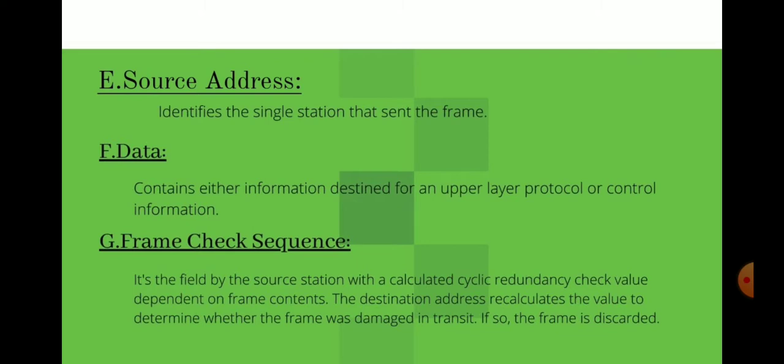The Frame Check Sequence (FCS) field is filled by the source station with a calculated Cyclic Redundancy Check value dependent on the frame contents. The destination recalculates the value to determine whether the frame was damaged in transit. If damaged, the frame is discarded. FCS is used mainly for error correction and discarding damaged frames.